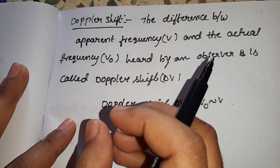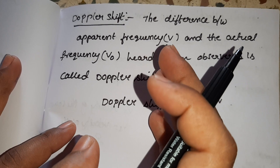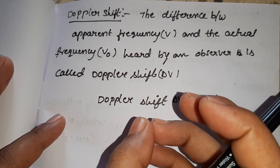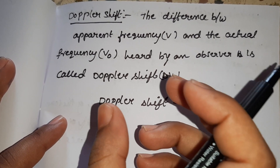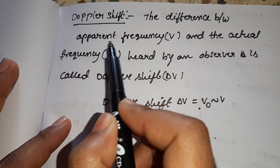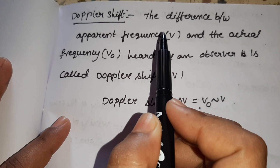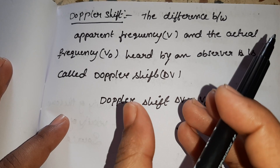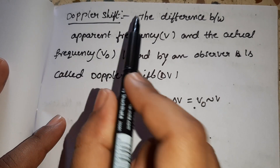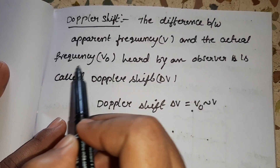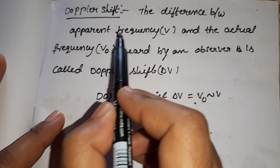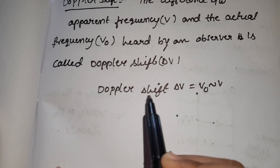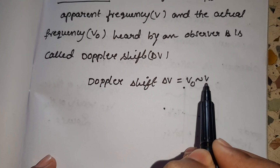So if you have an observer in a railway station, the apparent frequency is V0, and the Doppler shift is delta V. So Doppler shift is delta V is equal to V0 minus V.